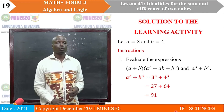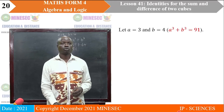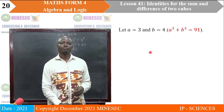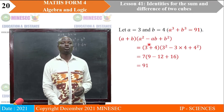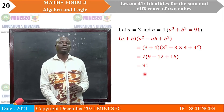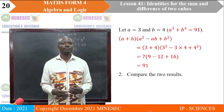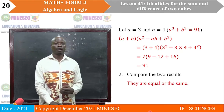We are also expected to evaluate A plus B into A squared minus AB plus B squared by substituting A as 3 and B as 4. When we simplify, we get exactly the same answer: 91. Comparing the two results, we observe that both answers are the same — here is 91 and there is 91.